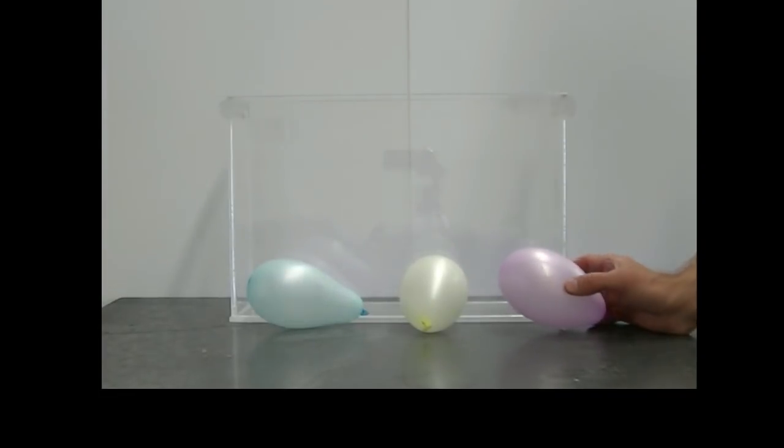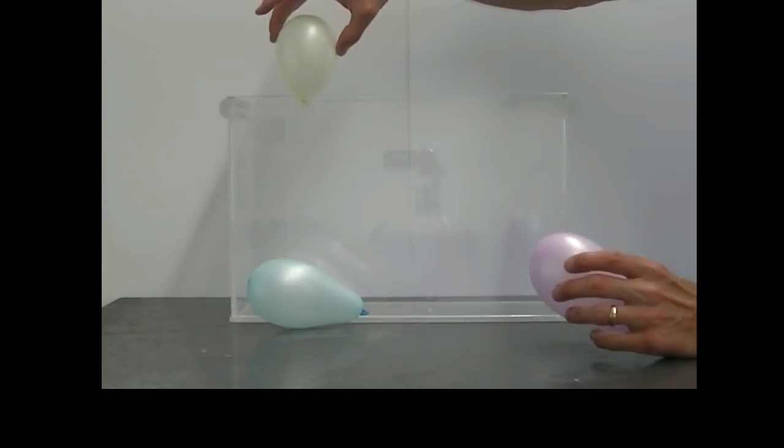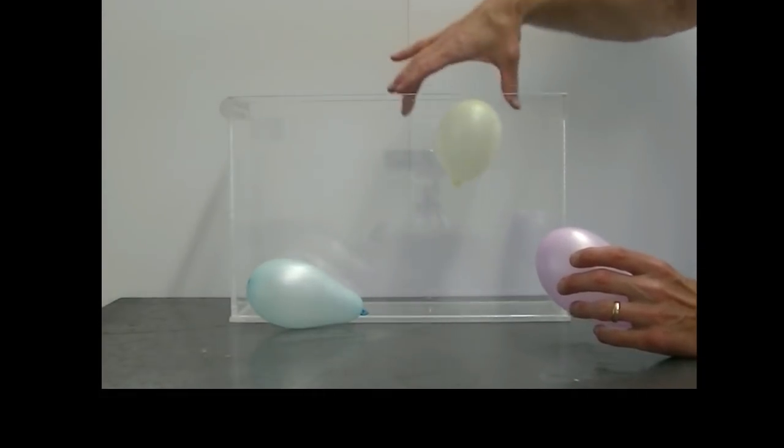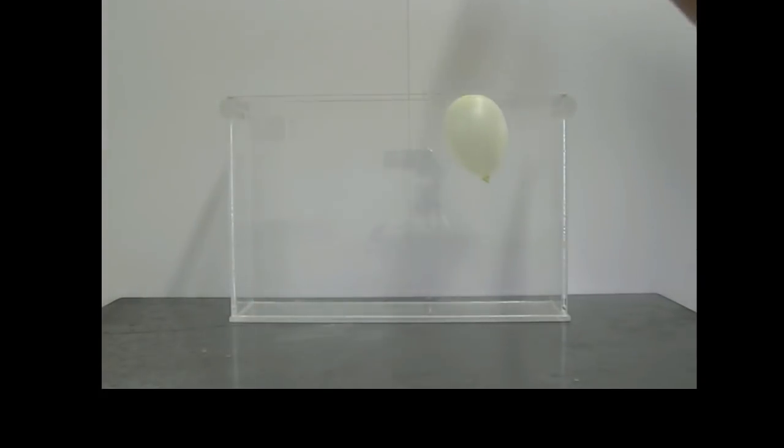So let's revisit our trick here. I've got this yellow balloon, and then I have this violet balloon, and then I have this blue balloon.